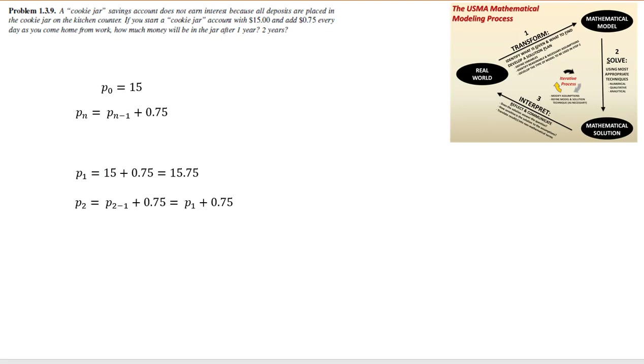We can continue this process to find p sub 2. After two days, how much money will be in the cookie jar. We find that p sub 2 is equal to p sub 2 minus 1, just substituting in n equals 2 for n, plus 0.75, and this equates to p sub 1 plus 0.75.